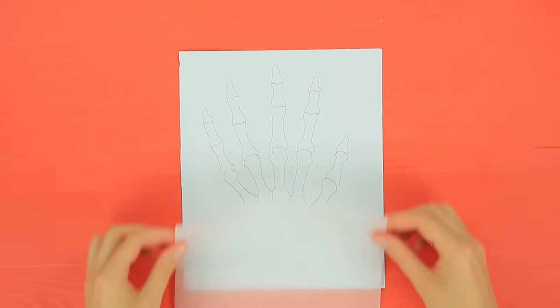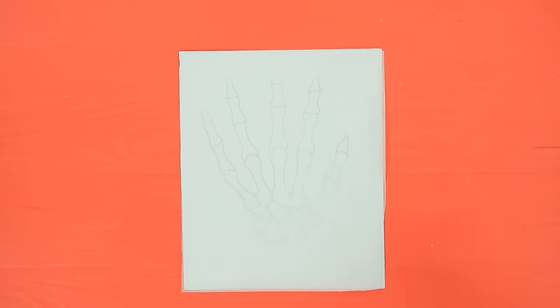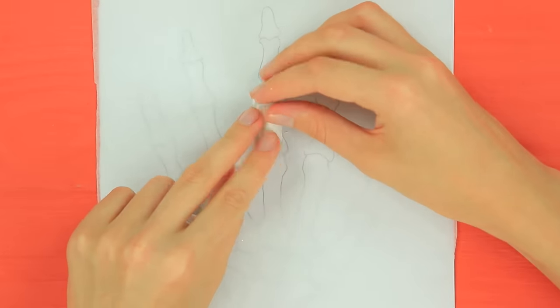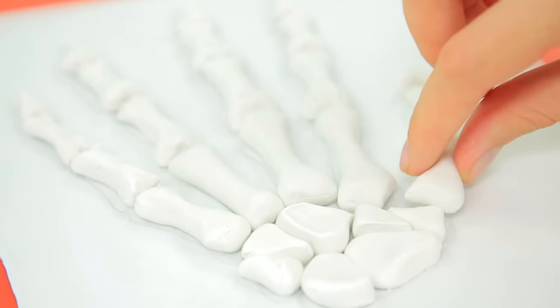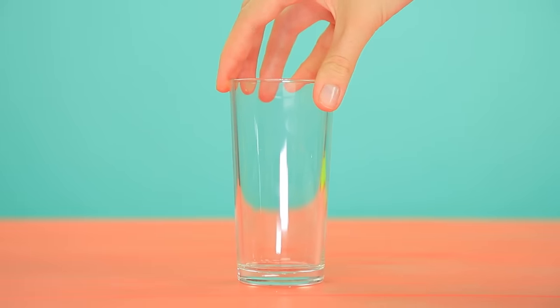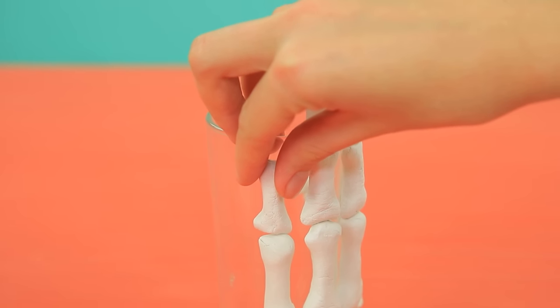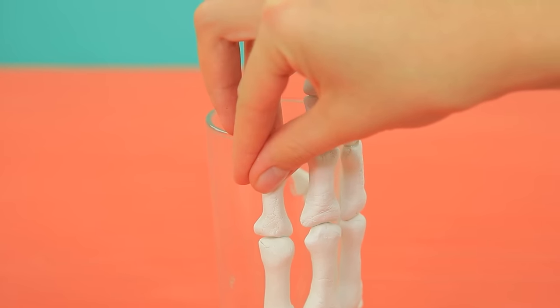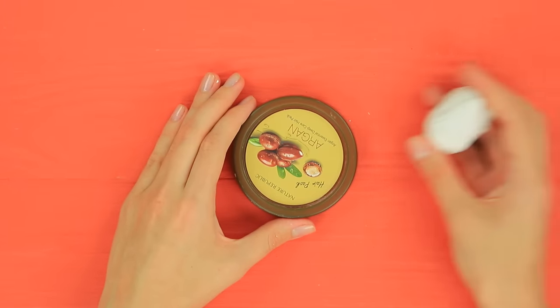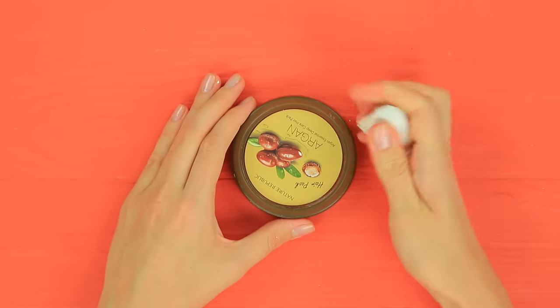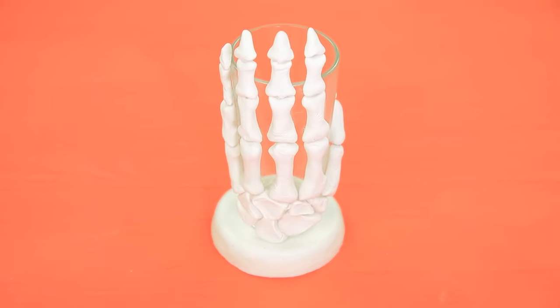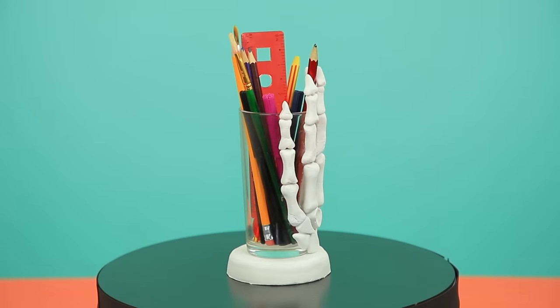No way! Cover a picture of a skeleton hand with parchment paper. Shape a skeleton by tracing the picture with air-dry clay. Let it harden! Attach the clay bones to a cup. Cover a lotion lid with air-dry clay. Fasten the cup to it. Fill it with supplies.